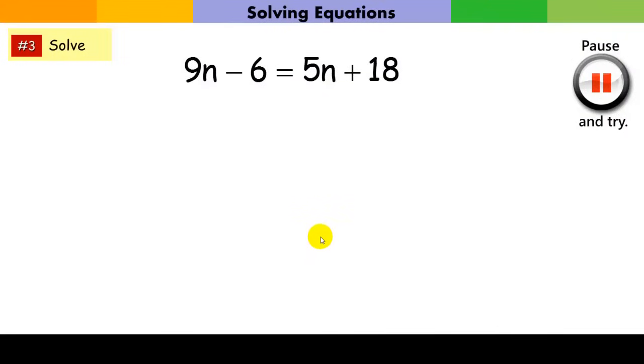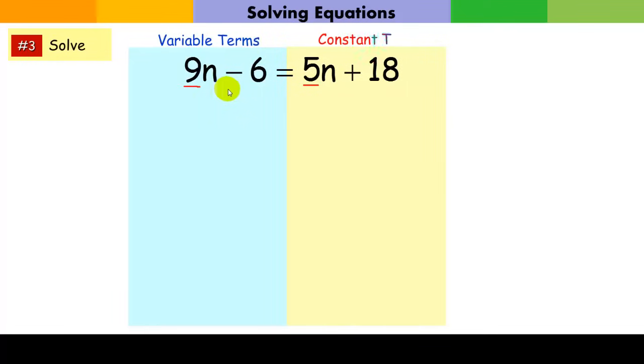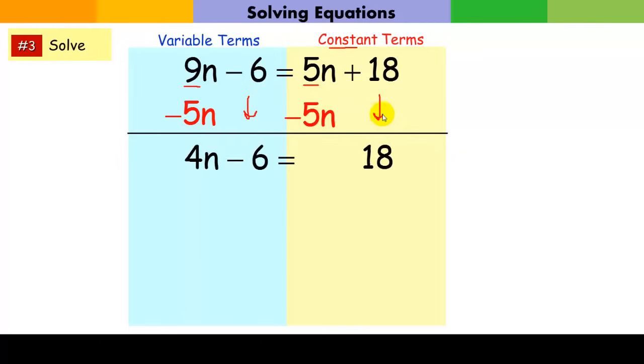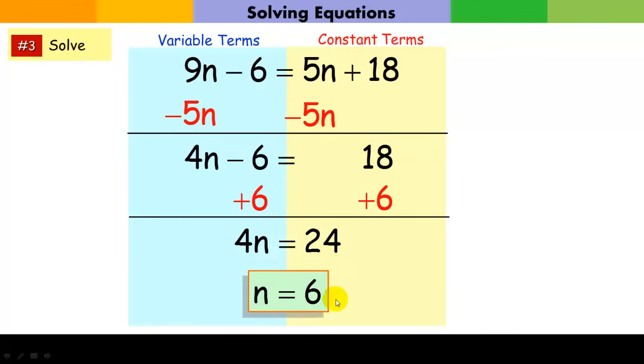Give this one a try. Again, I notice the coefficient 9 is larger than coefficient 5, so I'm going to collect all my variable terms on the left side. I'm going to subtract 5n from both sides, because this is a variable term on the constant side and I want to eliminate it. When I subtract 5n, it goes to zero. But if I do it to one side, I do it to the other, leaving 4n minus 6 equals 18. At this point it's just a simple two-step equation. I add 6 to both sides. Now I have just a variable term on one side and a constant on the other. Divide by 4, which gives me n equals 6.